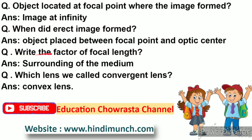Next question: write the factors of focal length. The answer is: the surrounding medium. Next question: which lens is called a convergent lens? The answer is: convex lens. A convex lens is what we call a convergent lens.